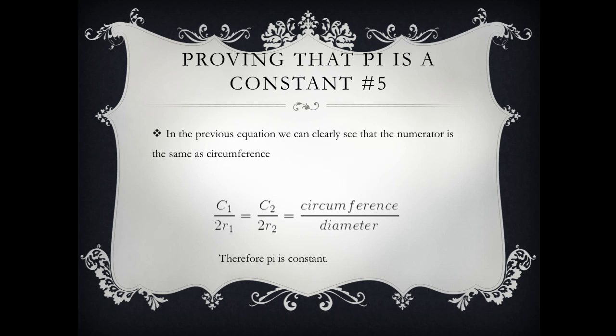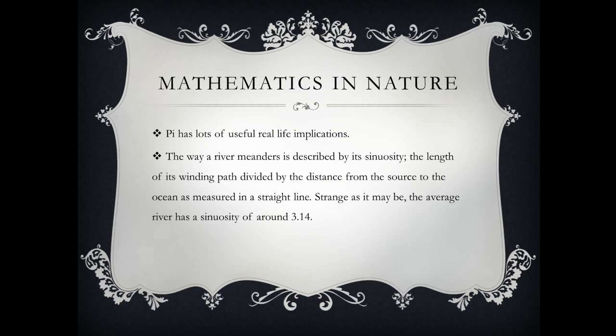So now let's talk about mathematics in nature. So first we start off with pi. Pi has lots of useful real life implications. The way a river meanders is described by its sinuosity. The length of its winding path divided by the distance from its source to the ocean as measured in a straight line. And if you notice that the average river has a sinuosity of 3.14 which is pi.